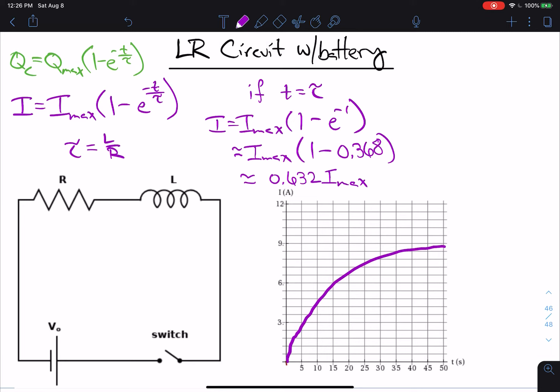And remember, 0.632 times I max is approximately 5.7. I said I max, my I max being 9. So that means I come across like this to there, roughly. And I come down from there, again, roughly. And that right there, just before 15, maybe around 14 seconds, that is tau.